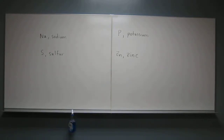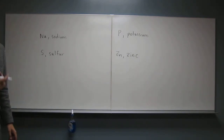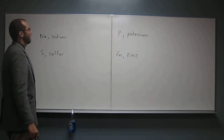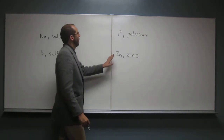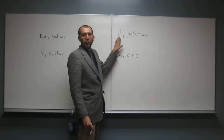Okay, let's do this one. Which symbol is incorrect for the following elements? So potassium — what should it be? Not P, but K.